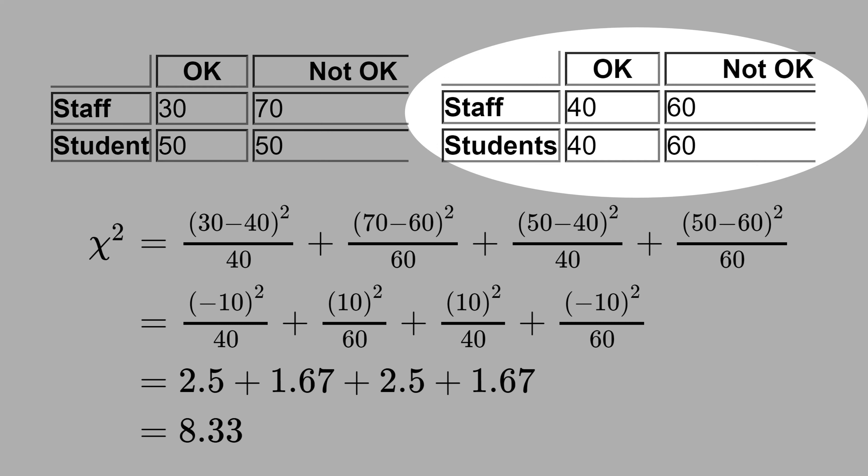But suppose that you see this data here. In this case, these two categorical variables are not associated. For both staff and students, they are 40% in favor of using drugs. That means information about the type of person does not help me to predict if they are OK or not OK about using drugs.